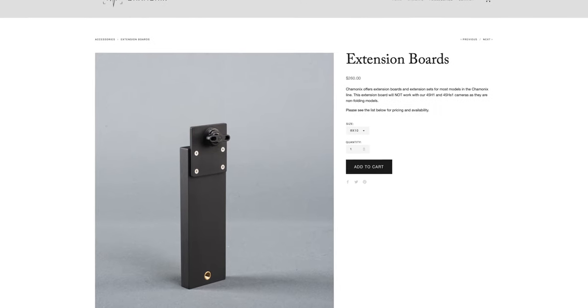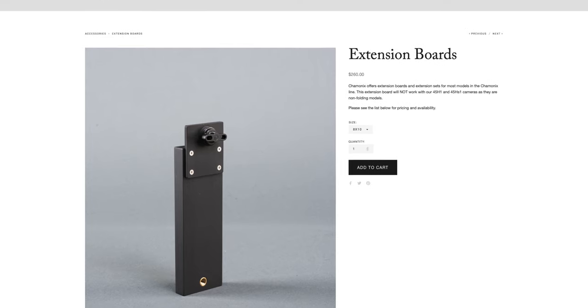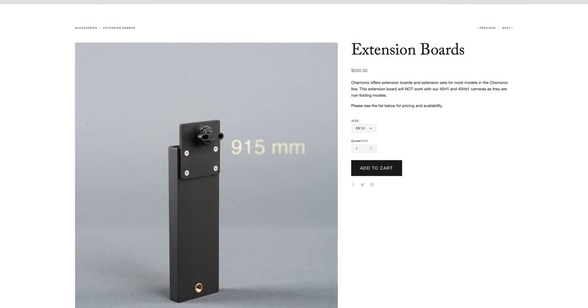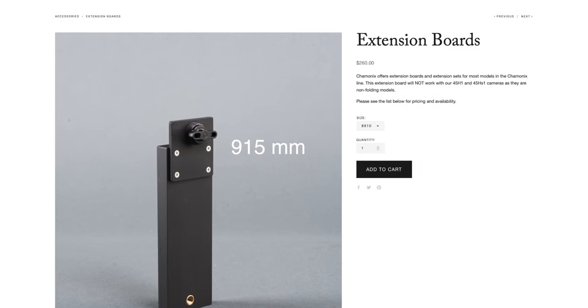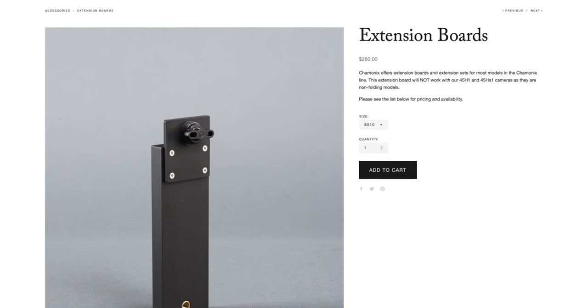Chamonix also sells an extension board that attaches to the very first threaded hole on the base of the camera that enables the camera to extend out to an impressive 36 inches with the standard bellows. This is useful for longer focal length lenses like the Nikon 1200mm lens or for macro photography.